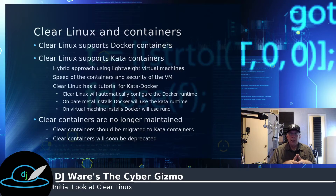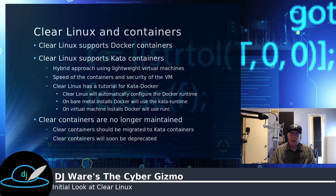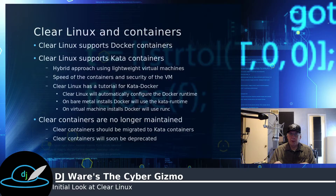Clear Linux also has containers. They support traditional Docker containers, and they also have something new called the Kata container, which is basically a hybrid — it provides a very thin VM. So you have the security of the VM wrapping Docker and the speed of the Docker container, giving you the best of both worlds. There are a couple of things to be aware of: if you're deploying on bare metal, the Kata runtime is used; but if you're using a virtual machine, they use RunC. Those two runtimes are very different and support different parts of the container standard, so just be aware of that.